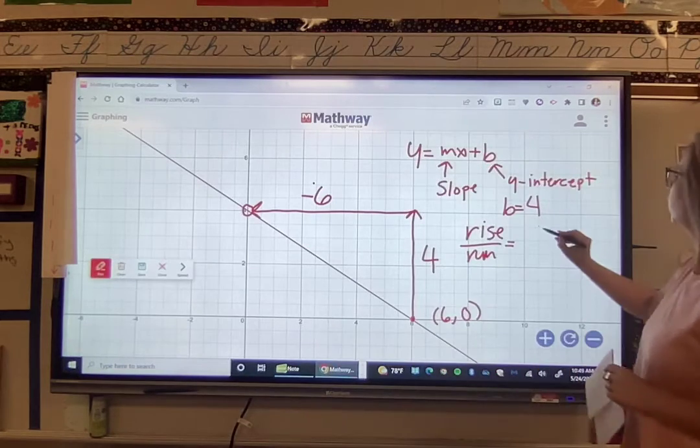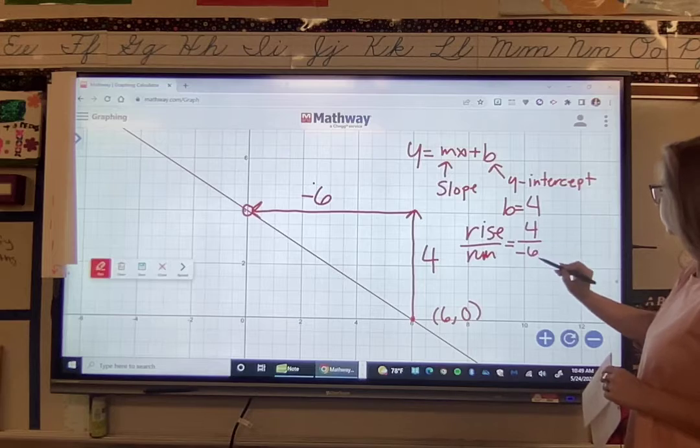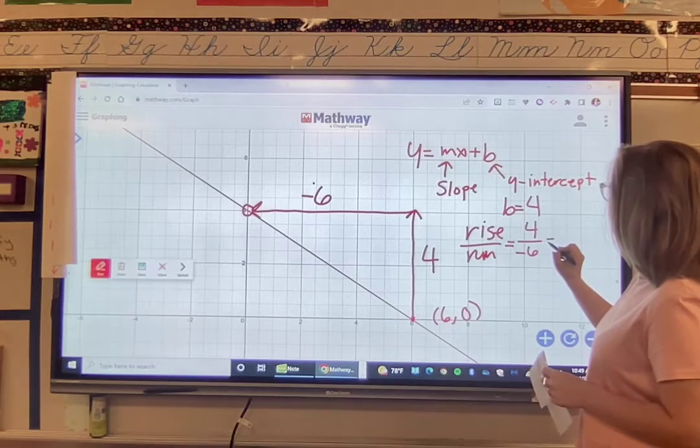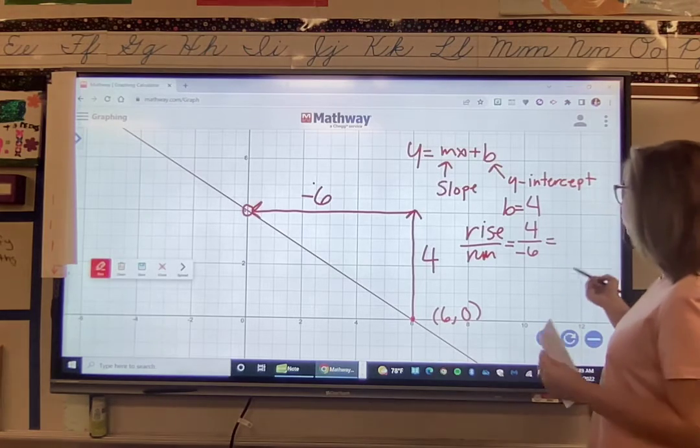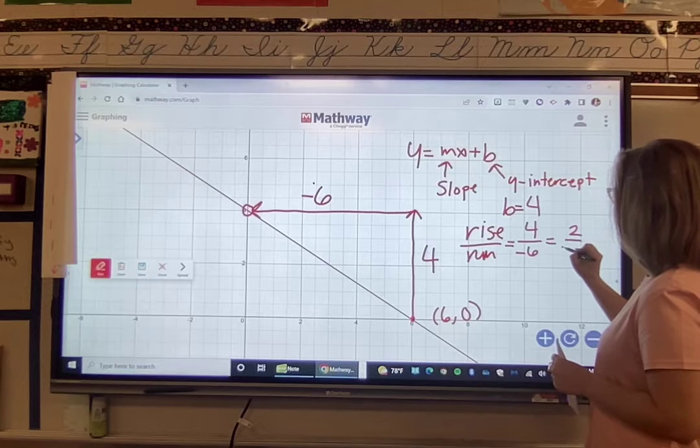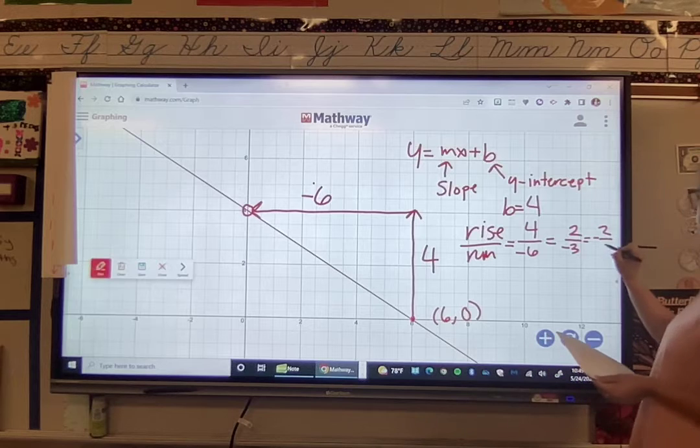So we have the rise as 4 and the run as negative 6. So we can simplify that, correct? So if we simplify it to its simplest term, that'll make it 2 over negative 3, which in reality would just make it negative 2 over 3.